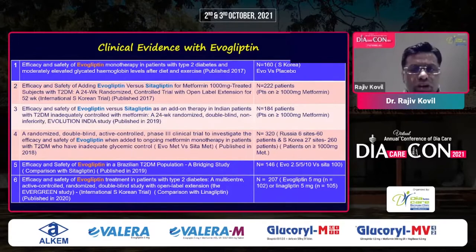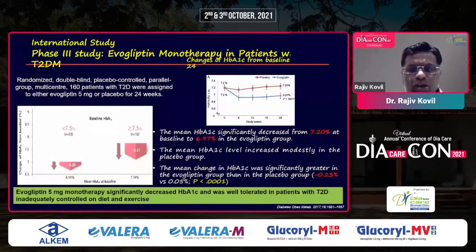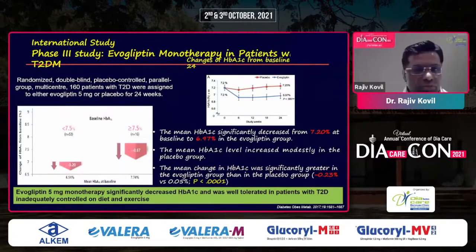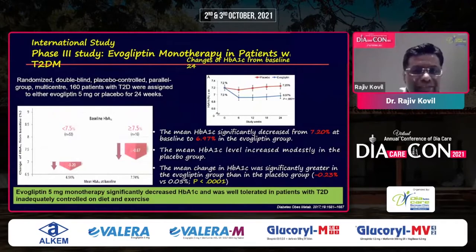In a placebo-controlled study of evogliptin versus placebo, there was a reduction of 0.3 percent which was considered statistically significant. Monotherapy is the first proof of concept — the proof of the pudding — and evogliptin is found to be good.